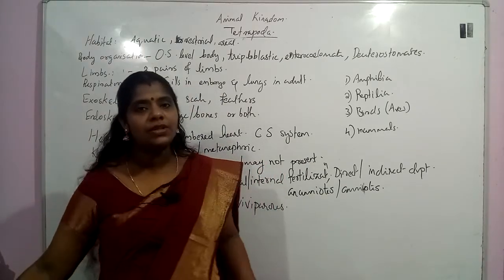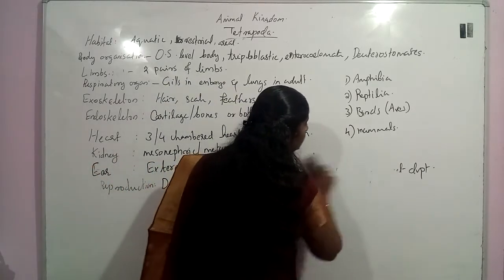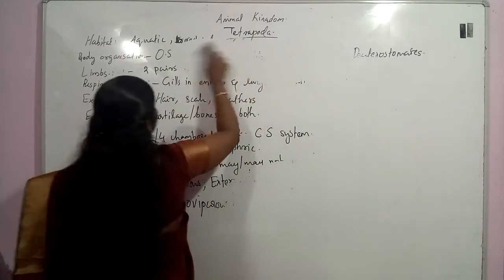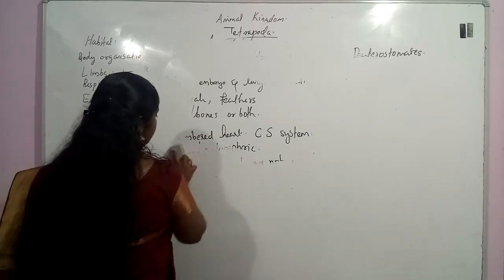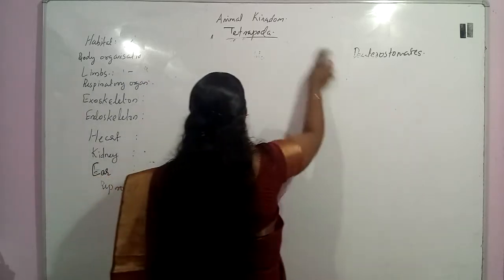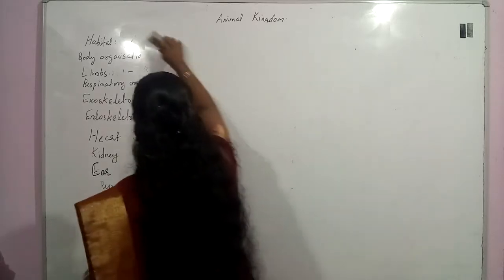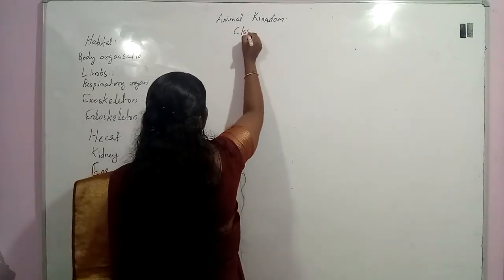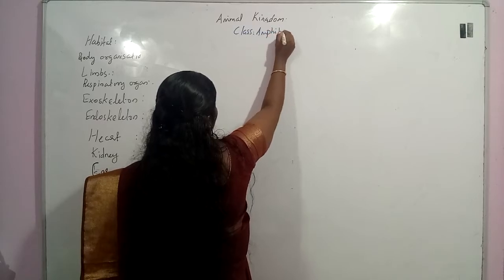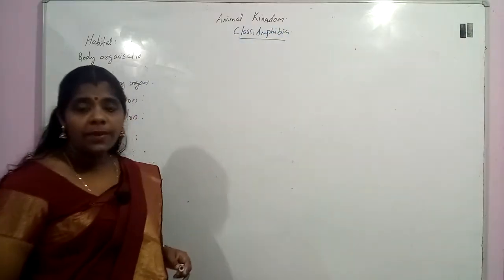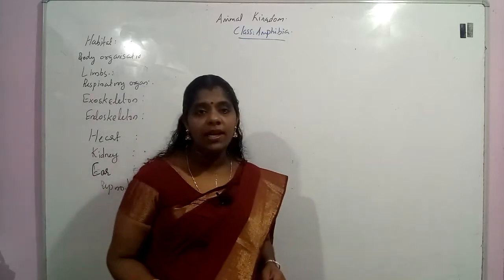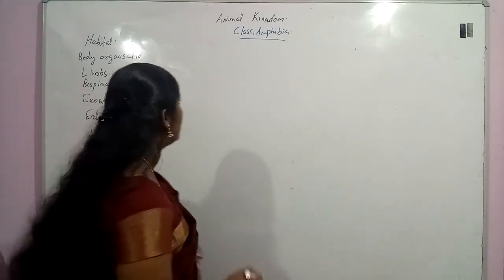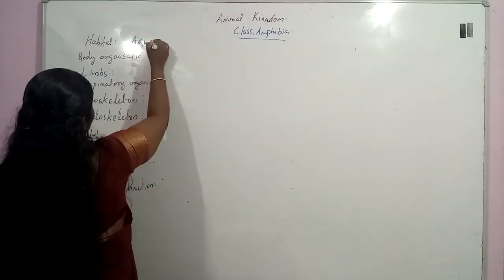Now we are going to see the characteristic features of Amphibia. The class Amphibia — from the word itself we can understand they can survive in both land and water. This is the first chordate that came out from the water. They are able to survive in both land and water. The habitat is aquatic or terrestrial.